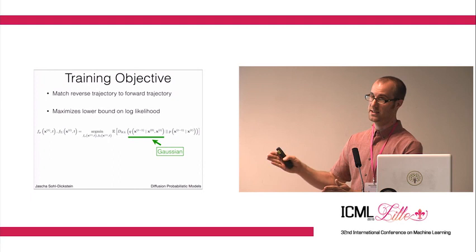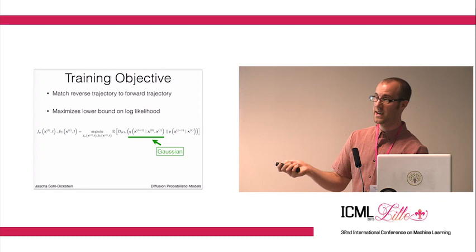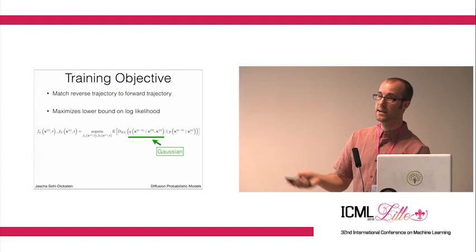The observation is that because your forward diffusion process is just the chain of these Gaussian steps, the distribution of your state at time t minus one, given your state at time zero and your state at time t, is just a Gaussian because the entire chain conditioned at time zero is a Gaussian.